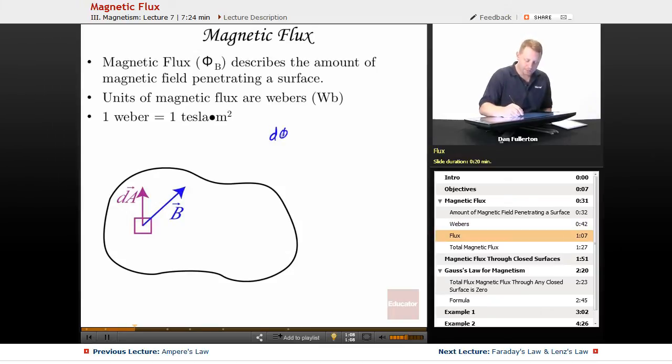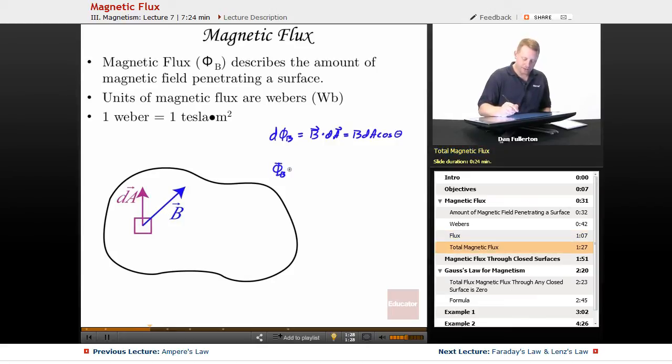The little bit of flux through that element dA is B·dA, which is B dA cos θ if we're looking for magnitudes, where θ is the angle between the normal and B. So then the total magnetic flux φ_B is...